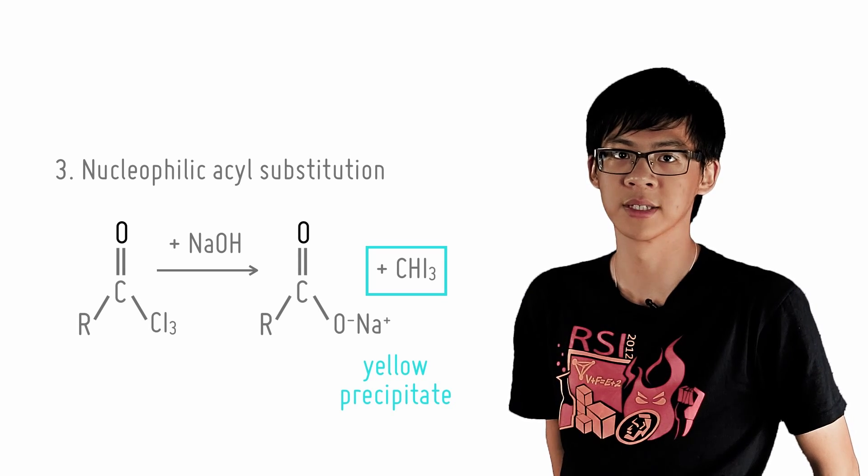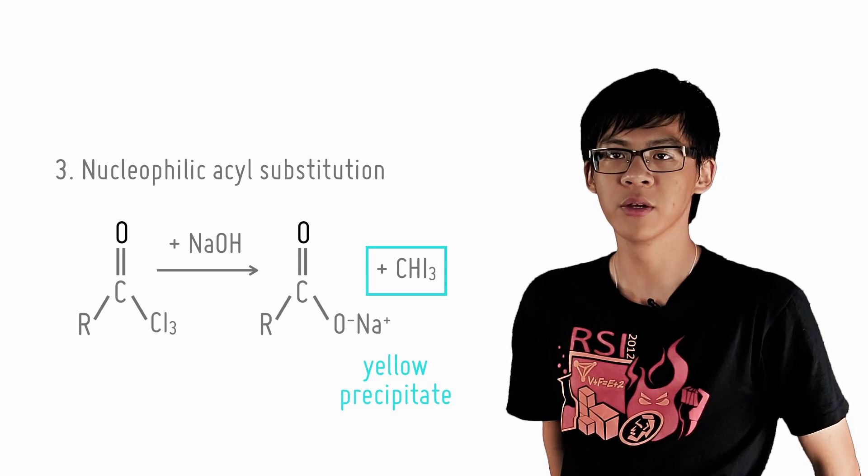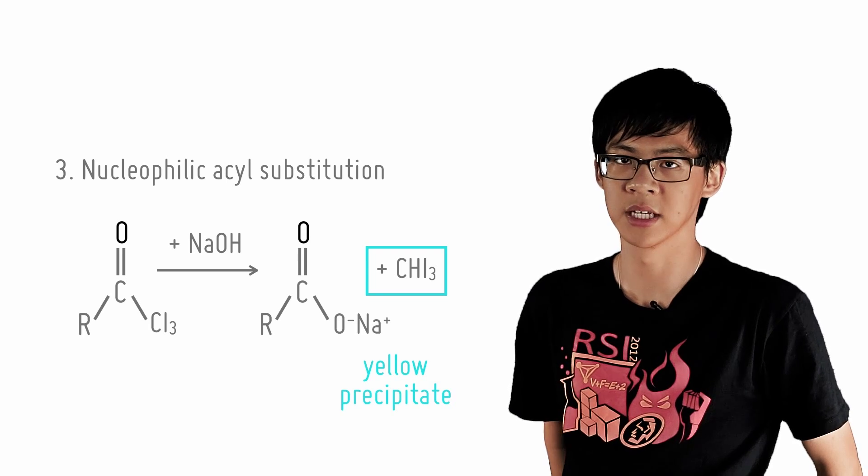Triiodomethane forms as distinct yellow crystals and this enables the iodoform reaction to be used as a qualitative test for the presence of methyl ketones.